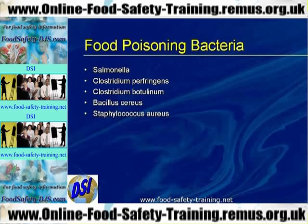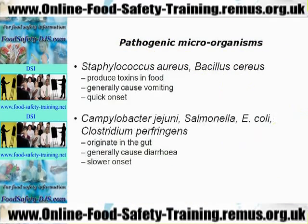Bacillus cereus is the bacteria we associate with rice poisoning — if you've ever eaten rice and become ill, this is probably the causative agent. Pathogenic microorganisms give rise to four major symptoms: nausea, vomiting, abdominal cramps, and diarrhea. Staphylococcus aureus and bacillus cereus generally produce toxins in food, cause vomiting, and have a quick onset — in other words, the food poisoning happens quite quickly. A memory aid: rice is a cereal, so 'cereus' sounds like 'cereal.'